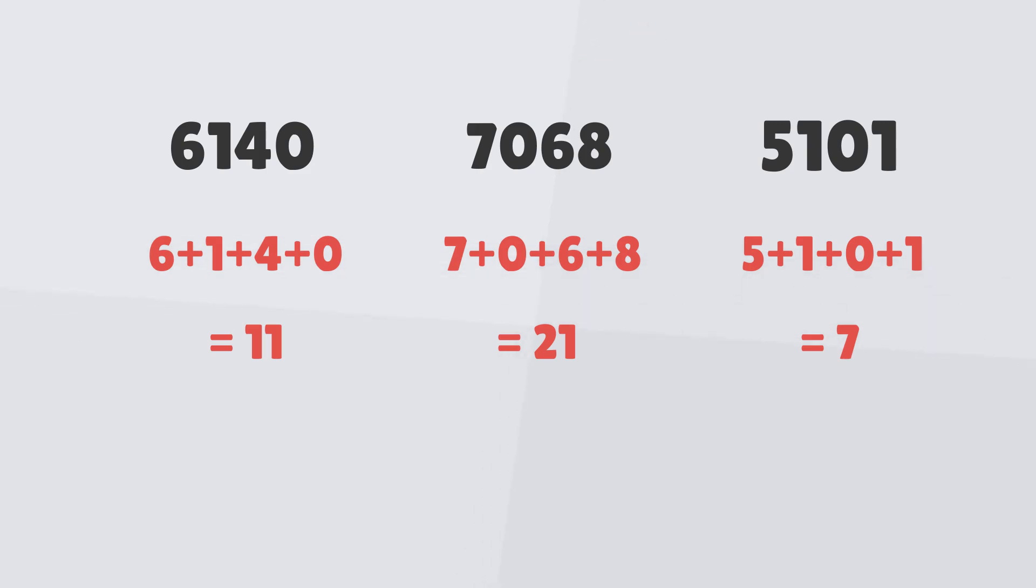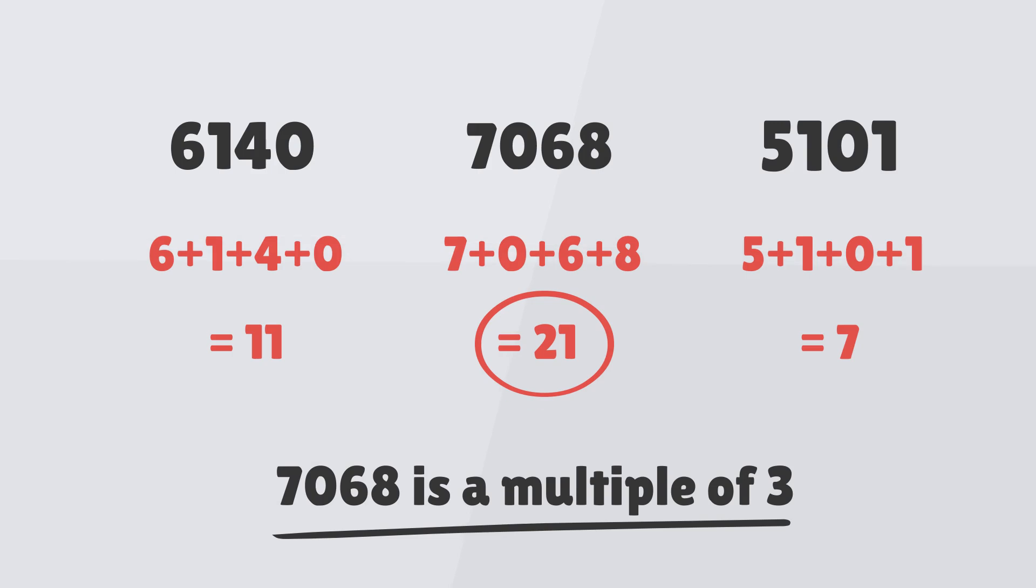The digits for 7068 add up to 21. This is a multiple of three. Hence, it's also the only one which will be divisible by three. Pretty handy.